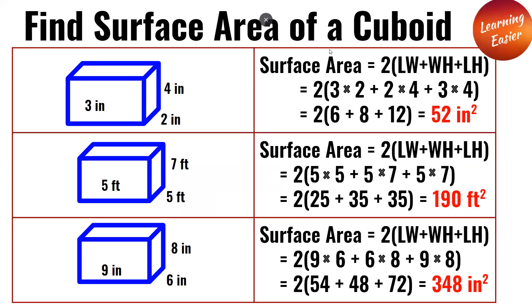Find the surface area of a cuboid. The first cuboid: the length, width, and height are 3 inches, 2 inches, and 4 inches. 2(3×2 + 2×4 + 3×4). 3 times 2 is 6, 2 times 4 is 8, 3 times 4 is 12. 2(6 + 8 + 12) is equal to 52 inches squared.